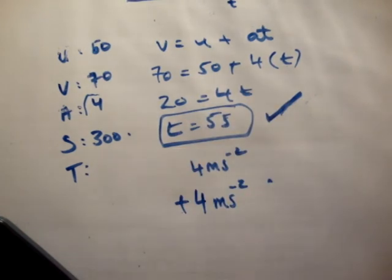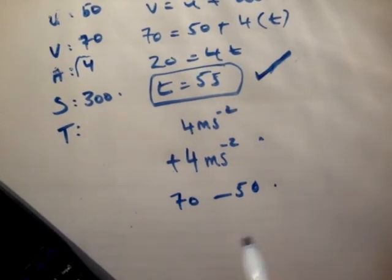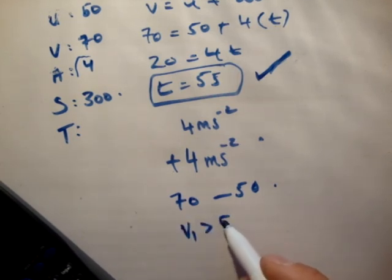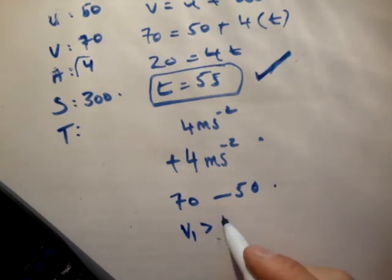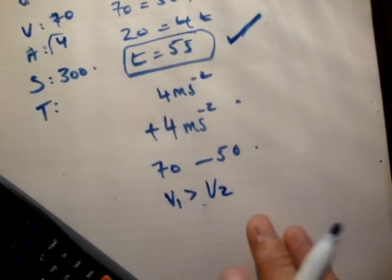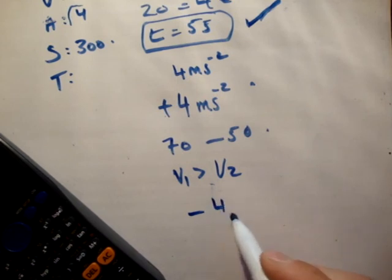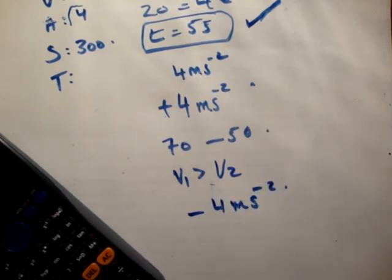However, if it was going the other way around, say from 70 down to 50, you know you're decelerating because v1 would be greater than v2. And if that is the case you're decelerating. In that case you would have maybe negative 4 meters per second squared or something along those lines.